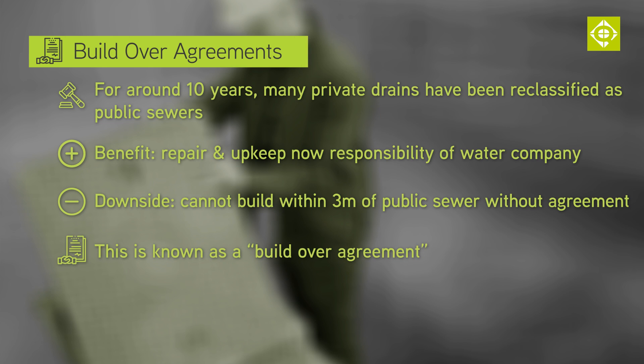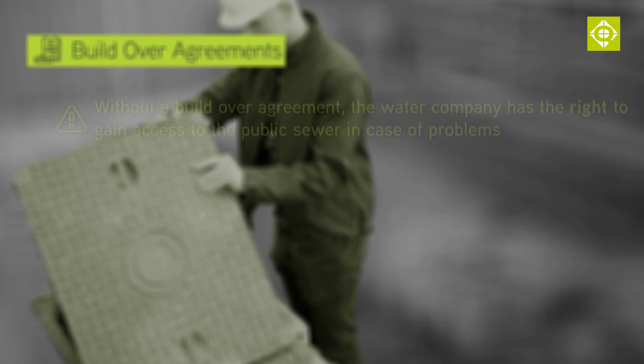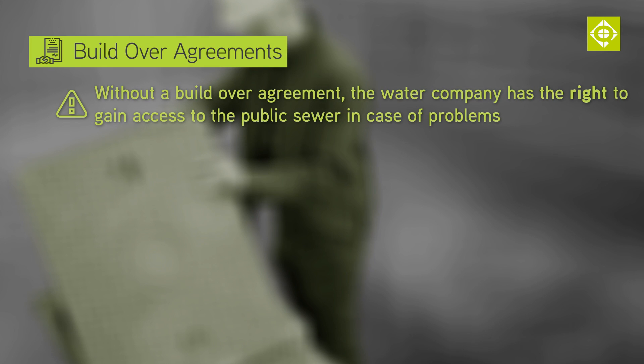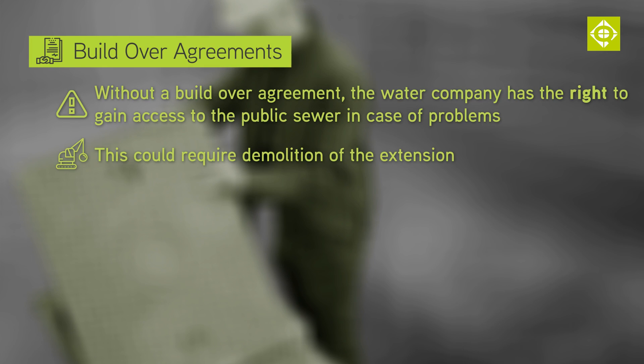This is where the build over agreements come in. Without one, if something happens to a public sewer that you have built an extension over, the water company has a right to come and gain entry to fix the problem, even if it means demolition of the extension. If the build over agreement has been entered into, then the water company no longer has the right to demolish the structure over the sewer.